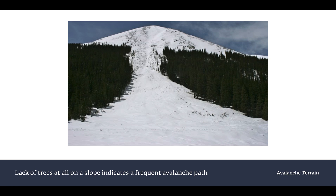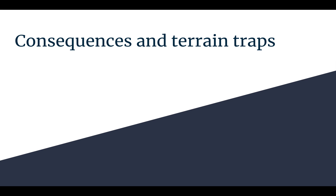Finally, a complete lack of trees indicates a very frequent avalanche path — one that typically slides more than once per year. As you can see in this example, snow was funneled through the chute and you can see the shape of the avalanche apron below with no trees at all. That's a very telling sign that this slope should not be skied under any circumstances, since historically these are large avalanches capable of clearing out entire miles of forest.